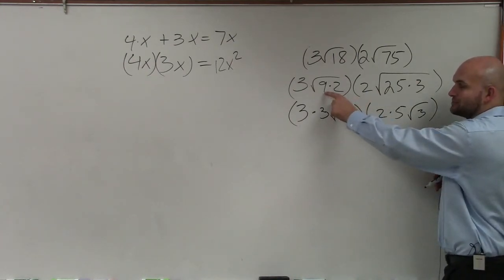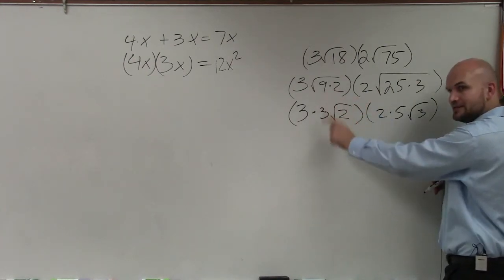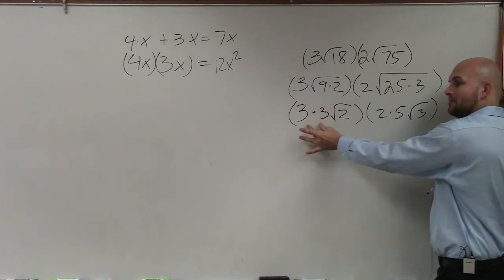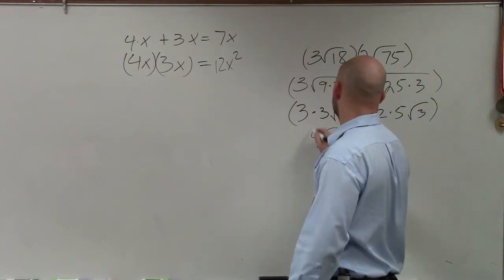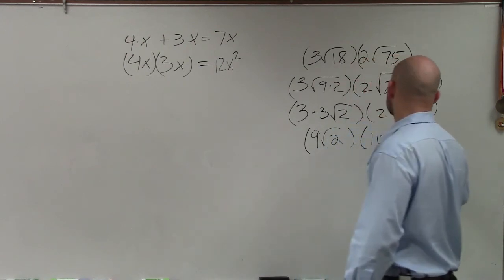Notice, square root of 9 is not square root of 3. It's the number 3. Now I can multiply these two. So that's 9 times square root of 2 times 10 square root of 3.